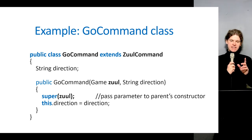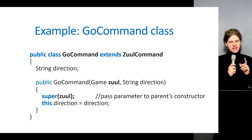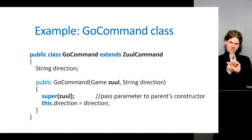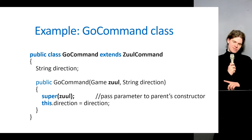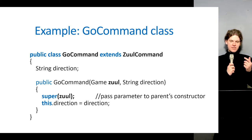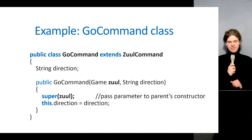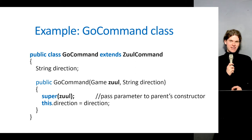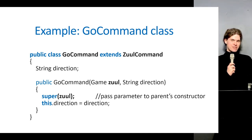In GoCommand, TakeCommand, and HelpCommand, in the children constructors you'll see a call to super — the parent's constructor. In the GoCommand constructor, we pass a parameter — the object of the Game class called zool — routing it through to the parent's constructor in the first statement. Underneath that we have a reference to this, which refers to the object of GoCommand. That's a handy way to get access to the parent through the child.